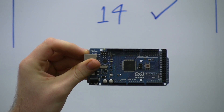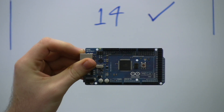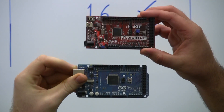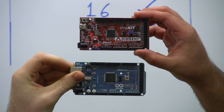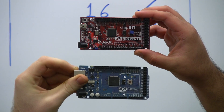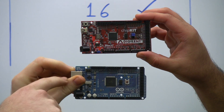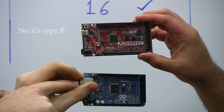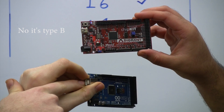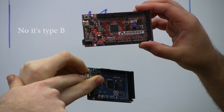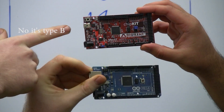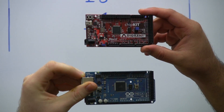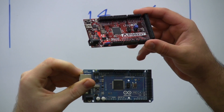And here's the chip kit Max32. You can see the major difference in connecting up to the PC - there's a USB type A port on this one, rather large, and a mini USB port on the chip kit.